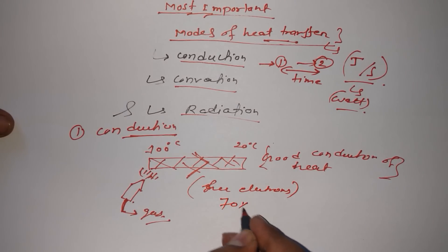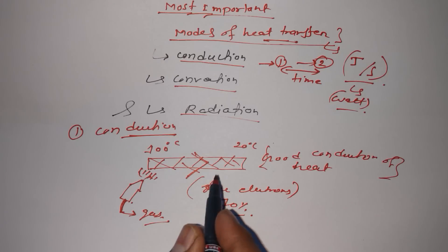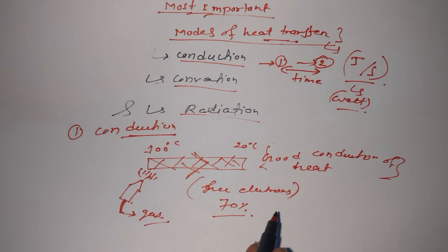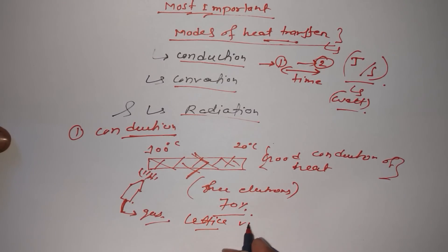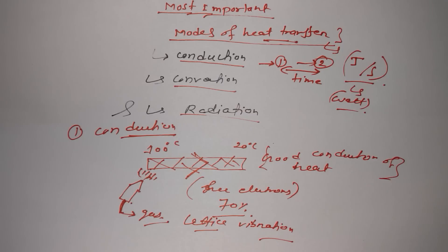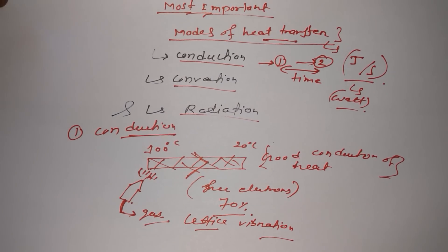Why does this happen? About 70 percent of the reason is free electrons present in the metal. The metal is a good conductor of electricity also because of free electrons. There is another reason as well — lattice vibration. In solids, heat transfer also takes place because of lattice vibration, but the main reason is free electrons. This is happening in solid, so most of the time conduction happens in solid, but it can also happen in liquids and gases.